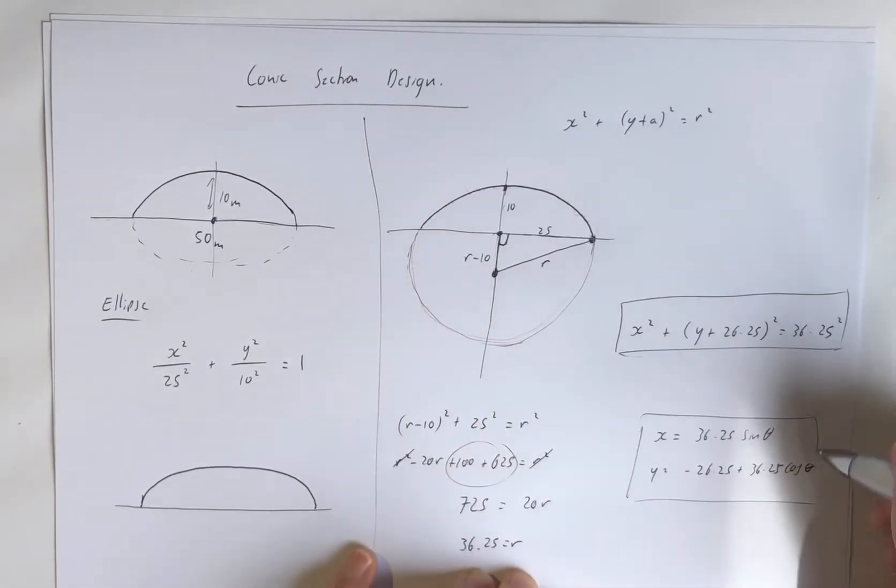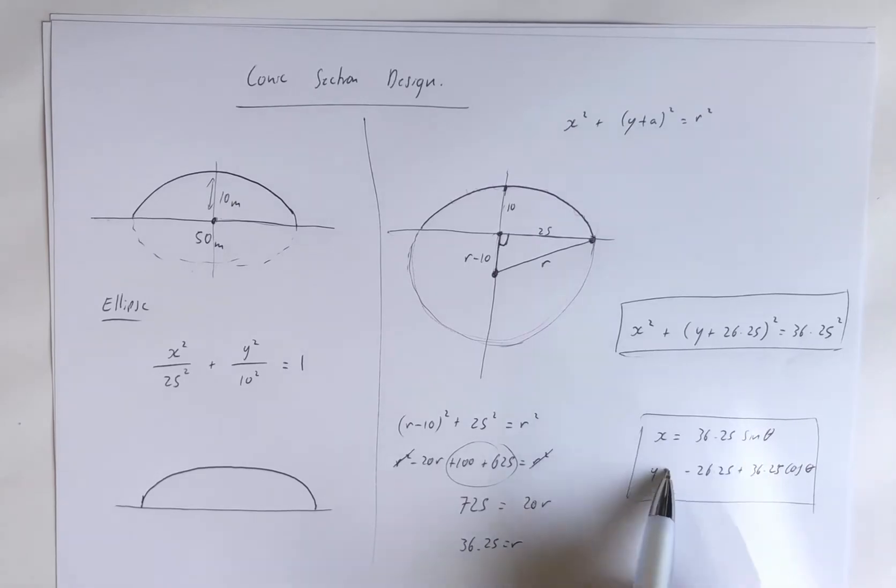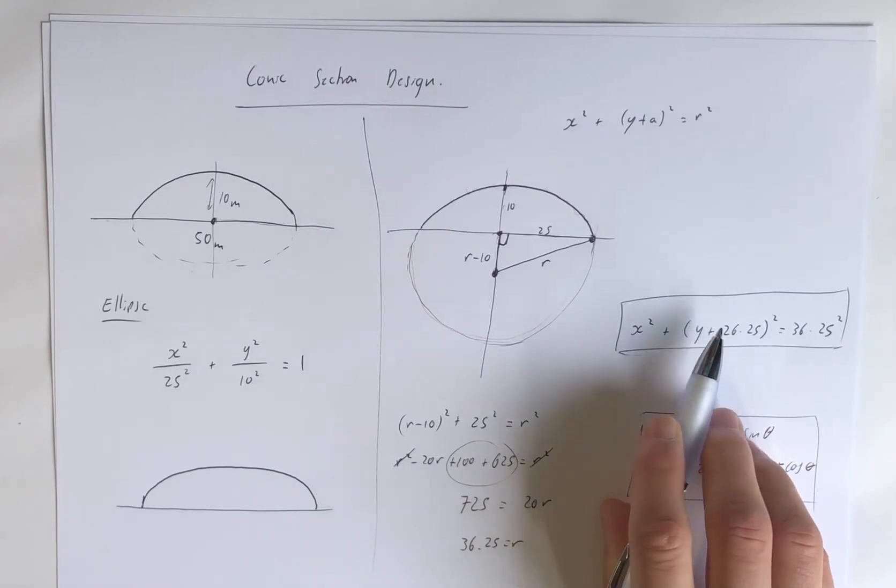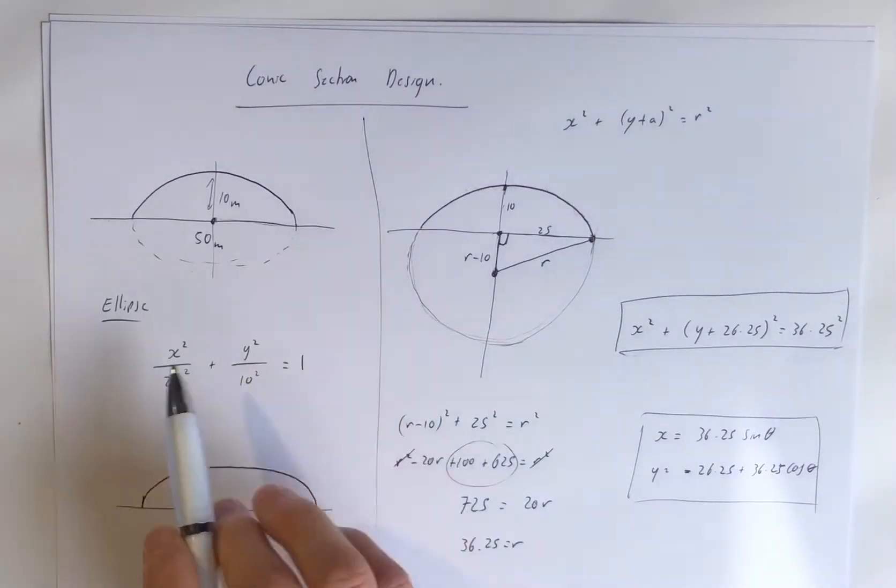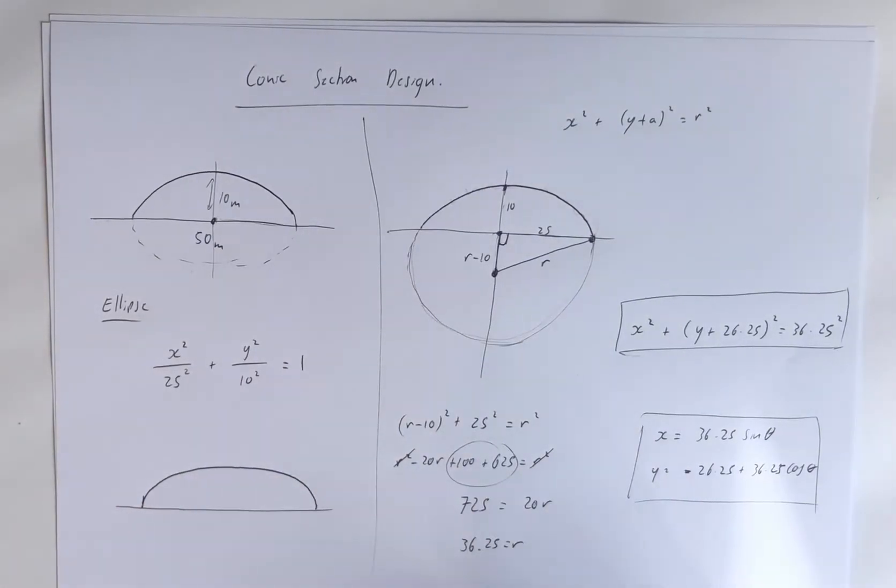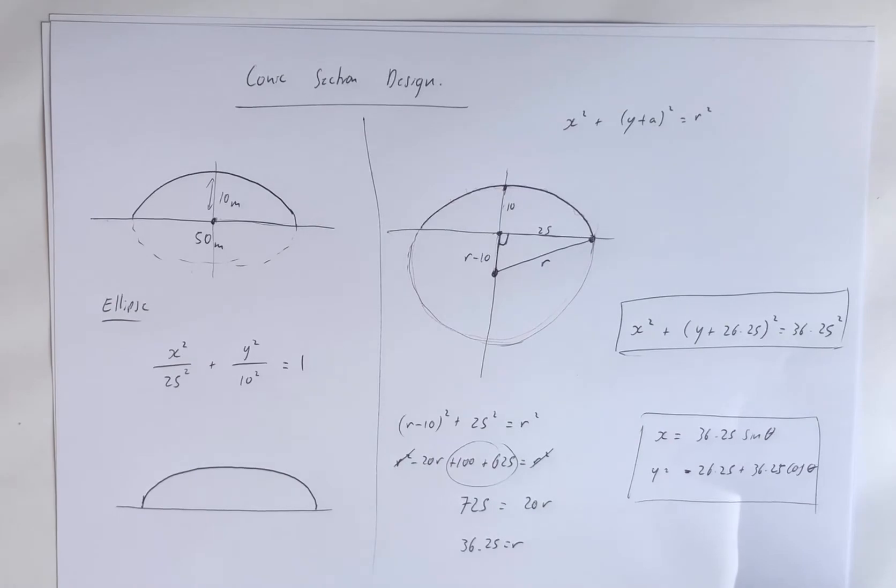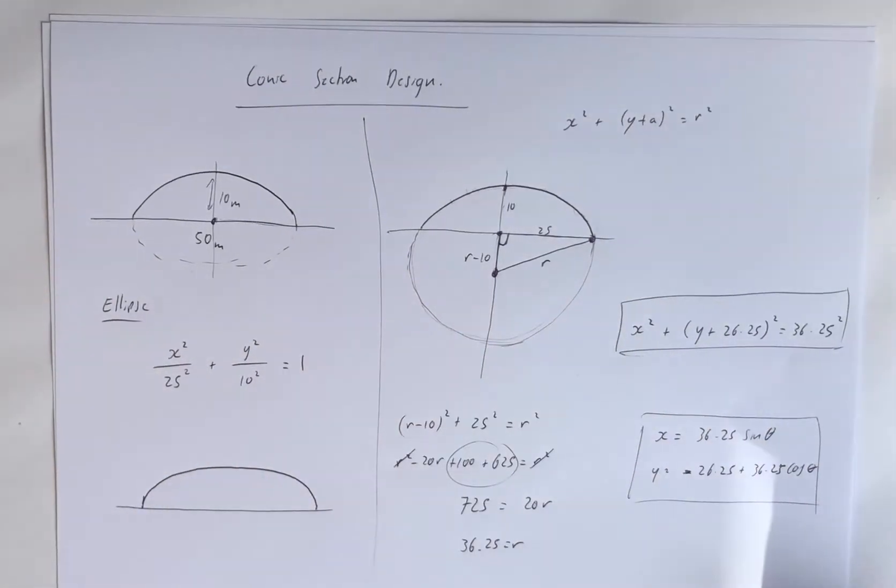So notice that it's got a shift in the Y direction downwards, so it's a negative. Remember if you move a Cartesian graph down, it's addition in there. So then we have just a quick recap of finding an elliptical and circular model for a roof design.